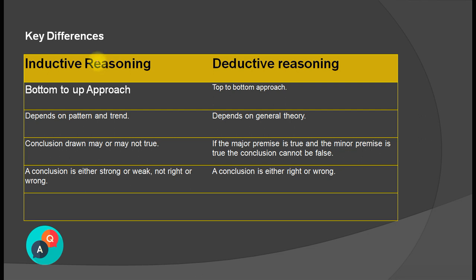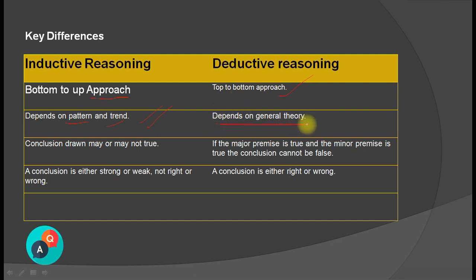Let us look at the differences between inductive and deductive reasoning. Inductive reasoning is a bottom-up approach, whereas deductive reasoning is a top-to-bottom approach. Inductive reasoning depends on patterns, trends, observations, and situations. Deductive reasoning depends on a general theory or general rule. Conclusions drawn using inductive reasoning may or may not be true.